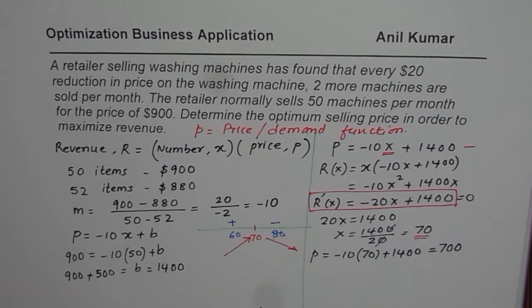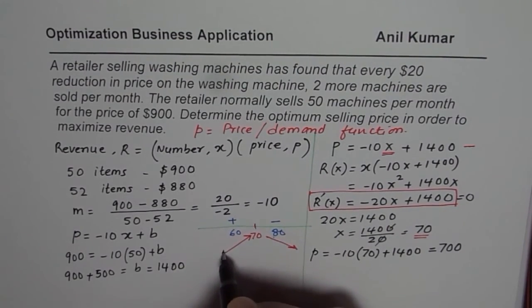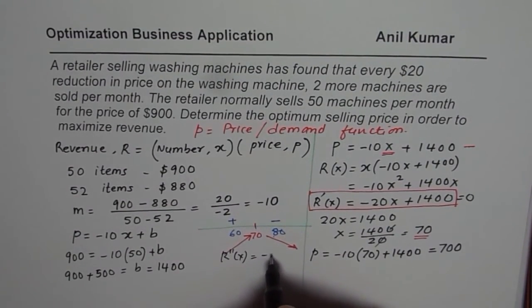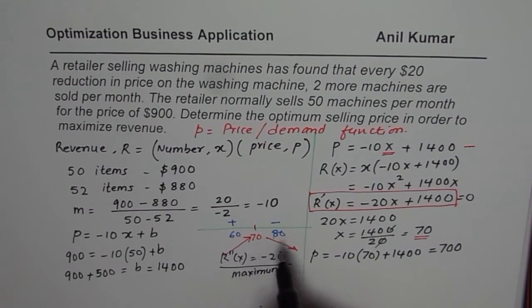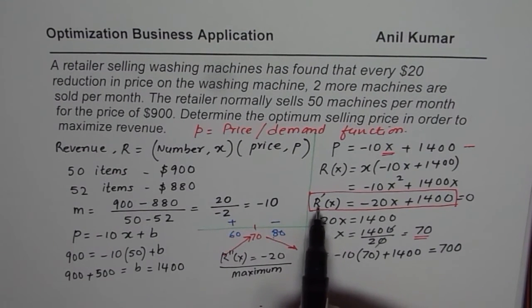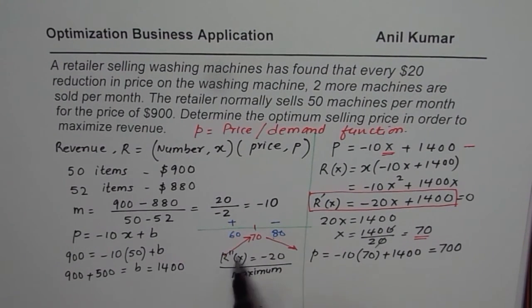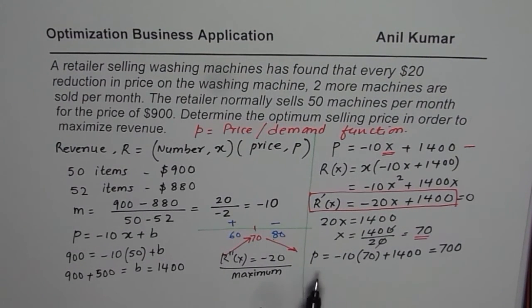Some of you who have also done the second derivative test can find the second derivative. If you find the second derivative of X, you get minus 20. Since that is negative, we know revenue is maximum. That is another way of doing it. You can test the revenue itself whether the rate is increasing or decreasing on or near the critical number which is 70 in our case.